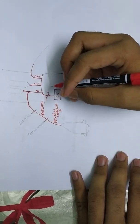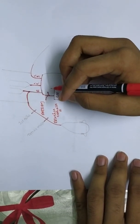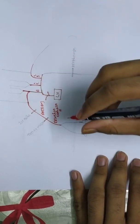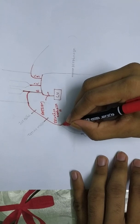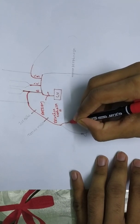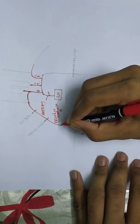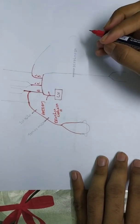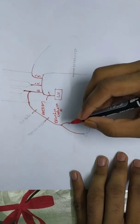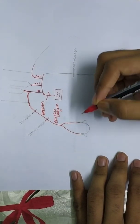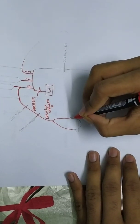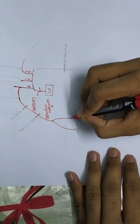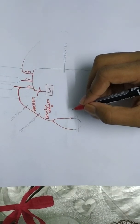The brachial artery, which we pass through the upper arm, gives rise to the ulnar artery and the radial artery. So the radial artery is in our hand.